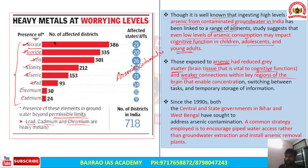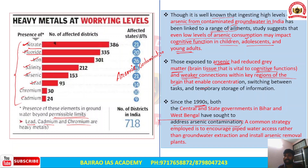Weaker connections in key brain regions impact functions like switching between tasks and temporary storage of information. Both high and low levels of arsenic impact cognitive abilities of children, adolescents, and young adults. Arsenic contamination is widespread in West Bengal, Bihar, Uttar Pradesh, and Assam. Since the 1990s, both the Centre and state governments like West Bengal and Bihar have sought to address arsenic contamination by encouraging piped water access rather than groundwater extraction and by installing arsenic removal plants.